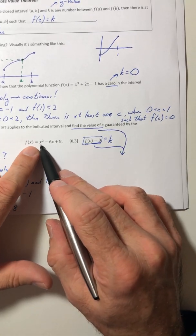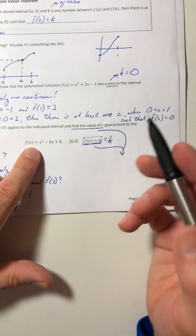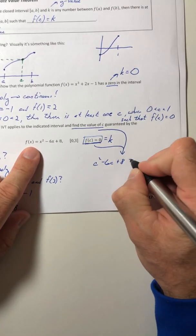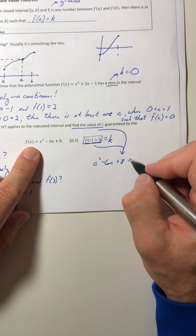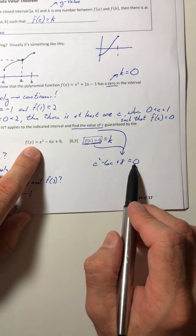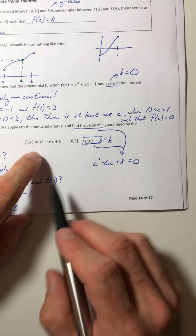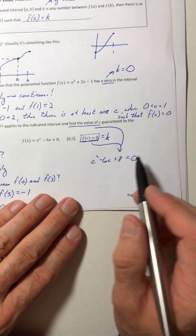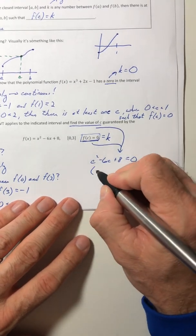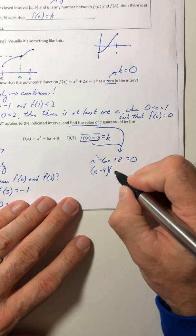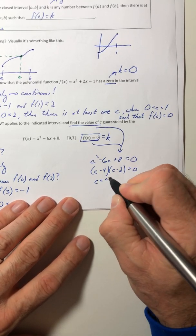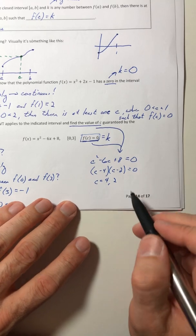So f(c) means you're replacing these x's with c's. Equals, in this case, it's a zero. If it says equal to one, then it's equal to one. If it's equal to five, it's equal to five. And then you solve that. This one, it's set equal to zero. So we just got to go with it. So factor. So c is equal to four and two.